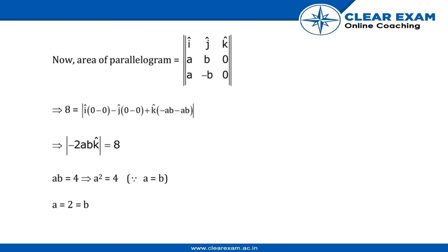Now area of parallelogram equals the determinant calculation. If we calculate we get 8 = |-2ab|, so ab = 4. Since a² = 4 and a = b, then a = b.